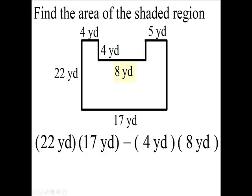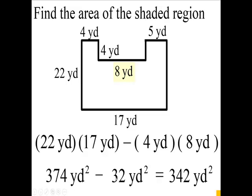So we're getting 374 square yards for these two minus 4 times 8. The area of the shaded region will be 32 from 374, which equals 342 square yards.